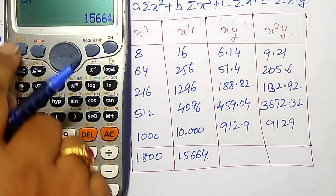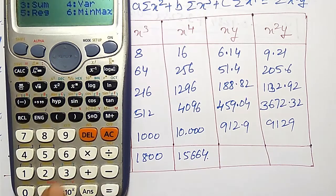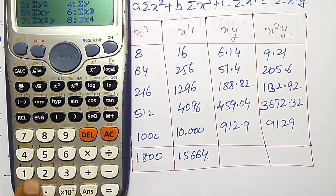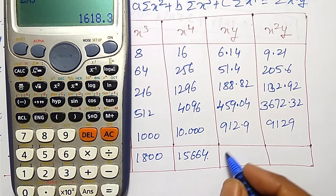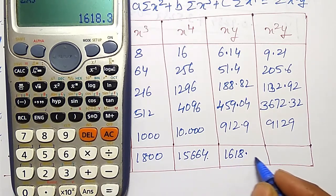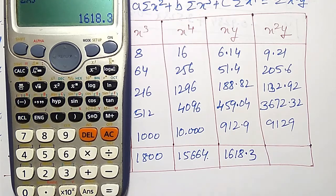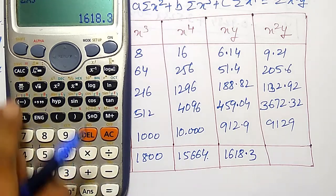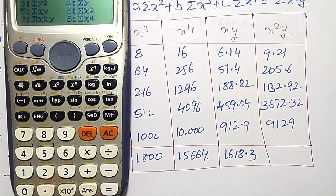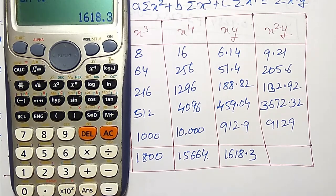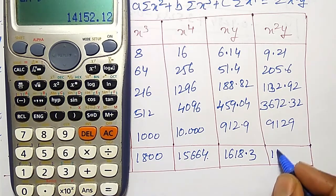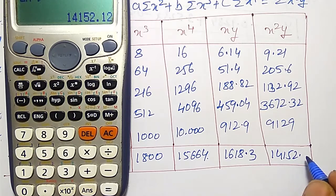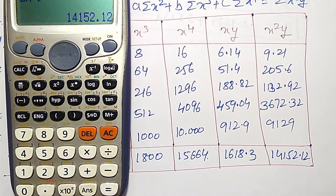Like that, summation of xy I want. Shift, stat, sum, xy option is 5. And I am getting 1618.3. Like that, x square y. Shift, stat, sum, x square y, option number 7. I am getting 14152.12.